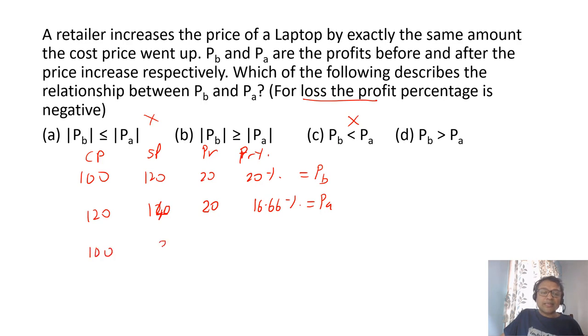So we have B and D option where profit after has to be less than profit before. Now let's look at this scenario. The moment they put mods and they said loss, that means loss also is possible. Let's look at a concept of loss. 100, selling price is 80, loss is 20, 20% loss. One error that I've done is an increase in the price. So my mistake, this should be 120 and this should be 100.